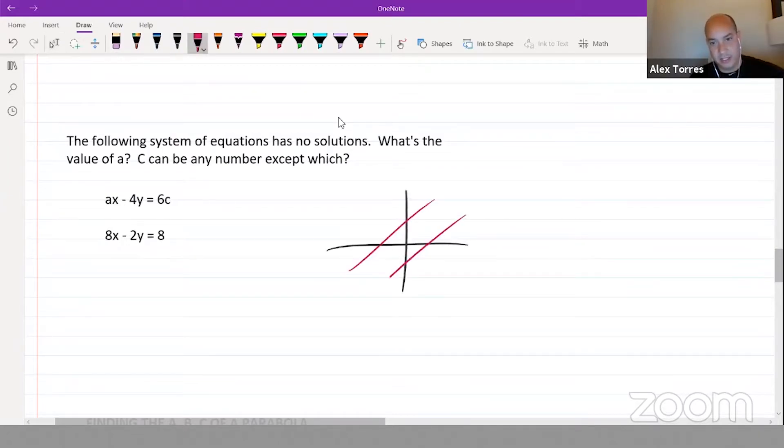No solutions means that my two lines would never hit each other. That means they have different y-intercepts, different b's, and they have the same slope, the same m's. We can arrange these both into y equals mx plus b. For the first one, I can take away ax from both sides and divide by negative 4.